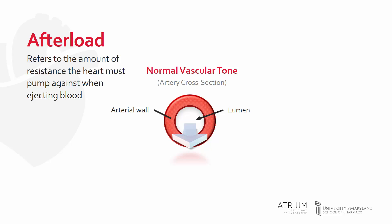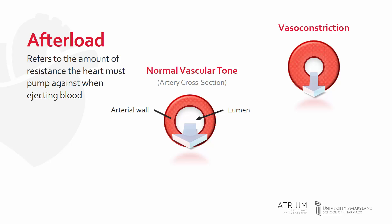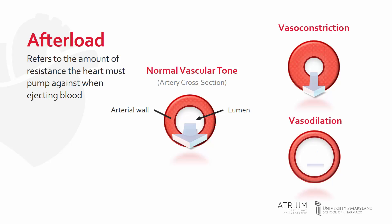Changes in vascular resistance are determined primarily by the diameter of blood vessels. The diagram here represents the cross-section of an artery, displaying the space through which blood flows, known as the lumen, surrounded by the arterial wall. The arterial wall is comprised of vascular smooth muscle, which can contract and relax based on neurohormonal signals, resulting in either vasoconstriction or vasodilation. Vascular resistance is increased by vasoconstriction, resulting in decreased forward flow, and decreased by vasodilation, resulting in increased forward flow.